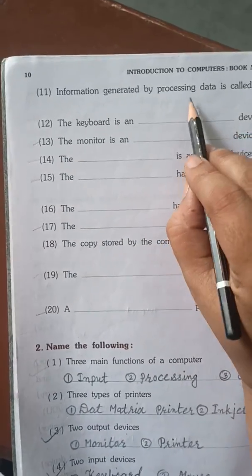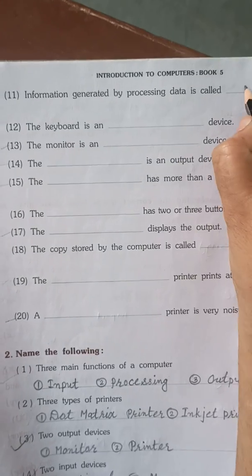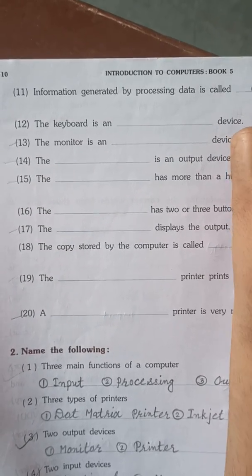Information generated by processing data is called output. What will we say? Output.